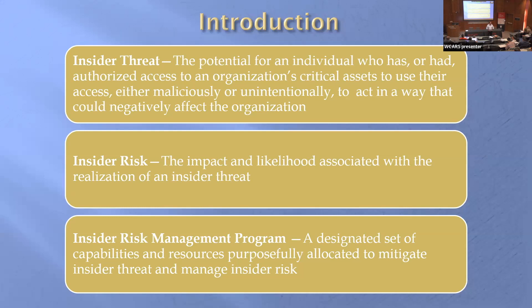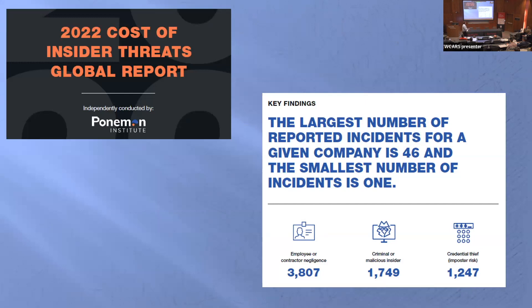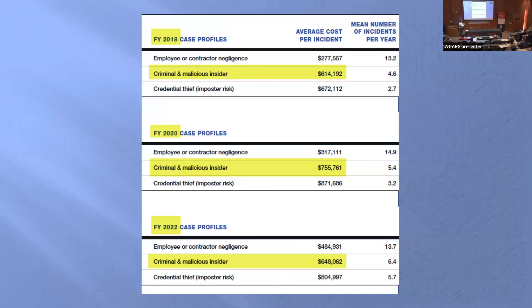I'm not sure whether you know these terms — they were all new to me up until about a year or so ago. One survey talks about the criminal or malicious insider with around 1,700 cases. Looking at three surveys going back two years each, we see the average cost per incident was more than $600,000, which really piqued my interest.